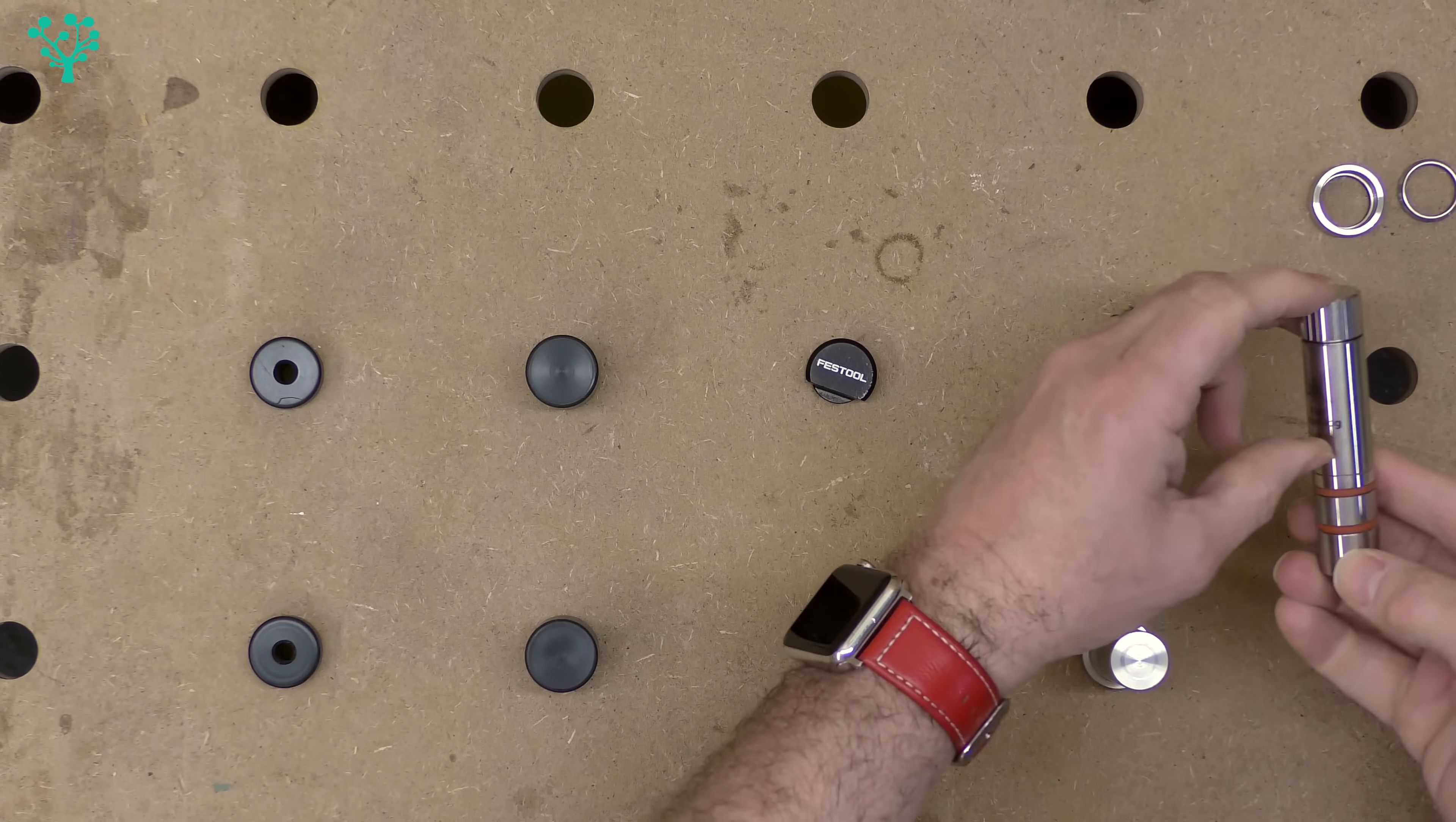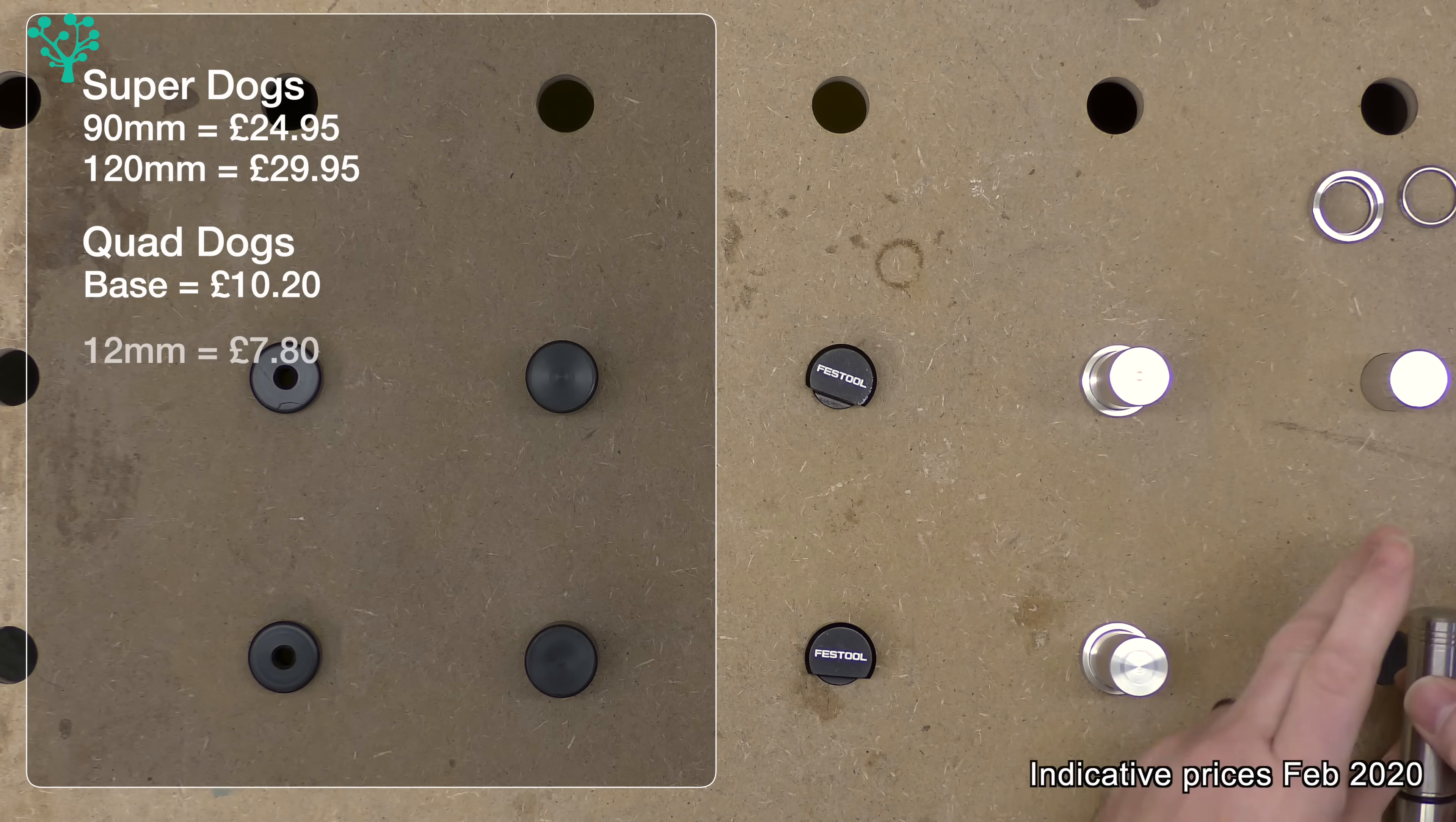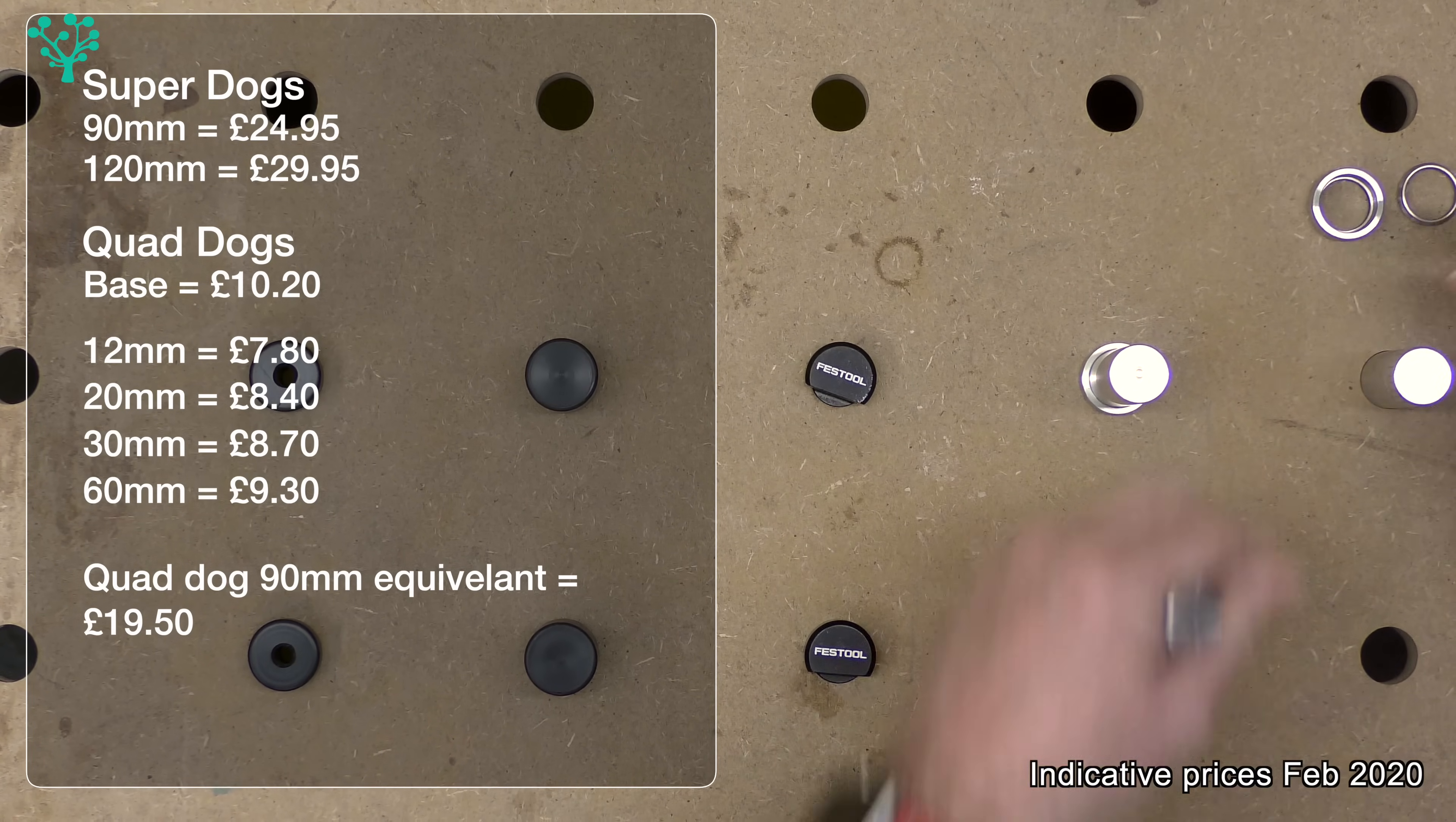The Superdogs come in two lengths, this is the 90mm one, and that one is going to cost you £25. The longer one, the 120mm one, is going to cost you £29.95, so nearly £30 for the long Superdog. The Quaddogs are slightly different when you buy them. You buy the base separately, and the base is going to cost you £10.20, but that base will then work on the full range of Quaddogs, and they come in at 12mm for £7.80, 20mm for £8.40, 30mm for £8.70, and this one, 60mm, £9.30, and again, that's for one. So to buy the setup I've got here, the 60mm with the base, will be £19.50, and when you contrast that to the Superdog at £24.95, then this one actually represents better value, assuming that, like me, you don't have a use for those two rings. There's no surprises, in my shop, I've gone for the Quaddogs.